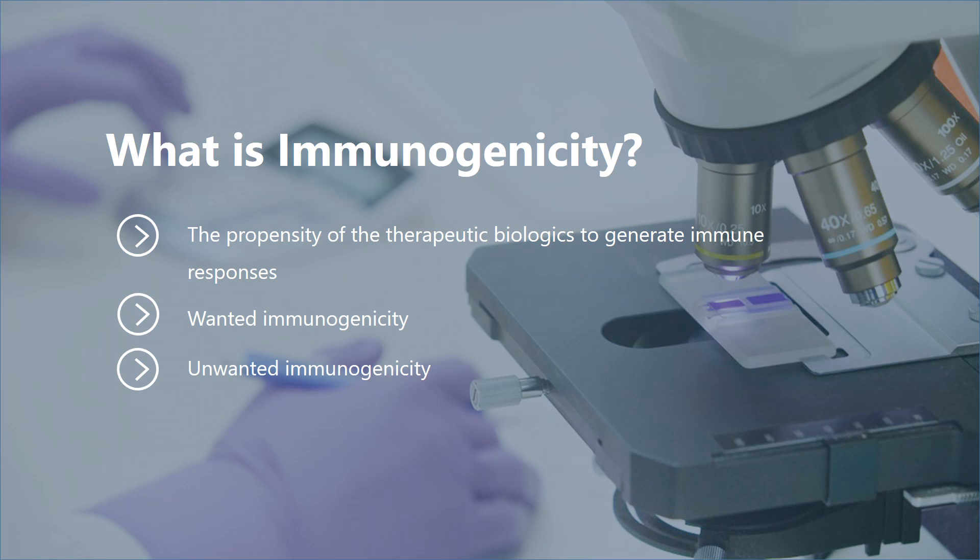Wanted immunogenicity is typically related with vaccines, where the injection of an antigen — the vaccine — stimulates an immune response against the pathogen, virus, bacteria, or cancer cell, aiming at protecting the organism. Unwanted immune responses to therapeutic biologics may neutralize their biological activities and result in adverse events, not only by inhibiting the efficacy of the therapeutic biologics, but also by cross-reacting to an endogenous protein counterpart, leading to loss of its physiological function. For example, neutralizing antibodies to therapeutic erythropoietin cause pure red cell aplasia by also neutralizing the endogenous protein. The meaning of immunogenicity in this overview is the latter — adverse immune response — in the therapeutic biologics discovery and development.